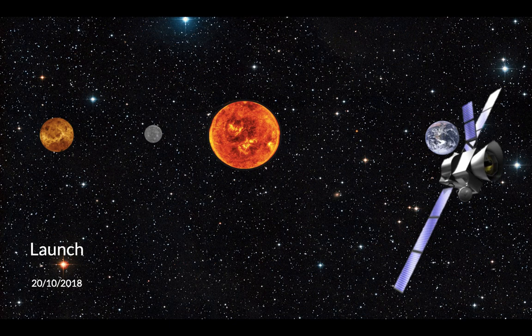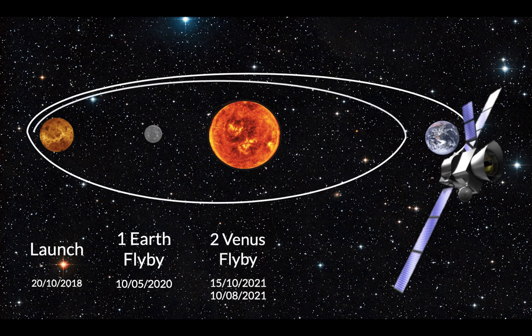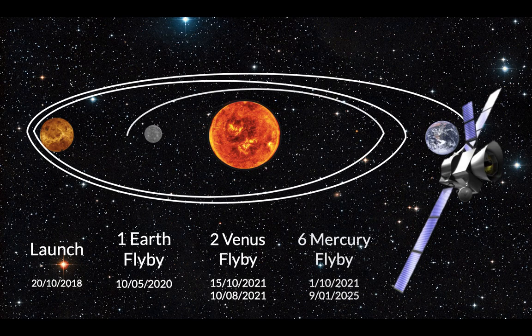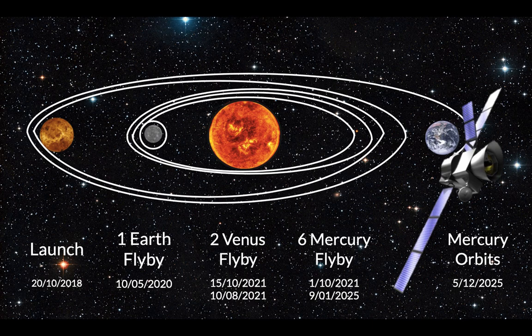The mission was launched in 2018 and has done one Earth flyby, two Venus flybys and is now doing the six Mercury flybys. It will enter Mercury's orbit in 2025. This is the last phase of the mission and is when the two spacecraft separate from each other, orbiting individually.